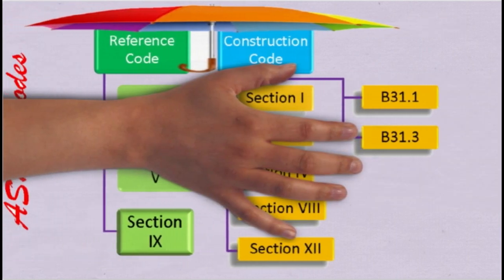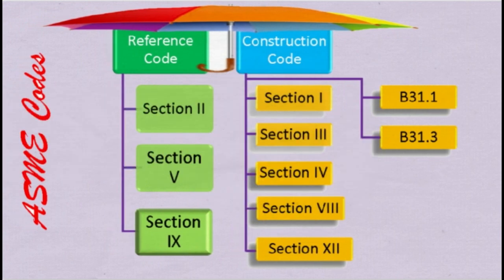As we know, ASME codes are divided into two parts: reference codes and construction codes. Construction codes are Section 1, which covers rules for construction of power boilers; Section 3, which covers rules for construction of nuclear facility components; Section 4, for construction of heating boilers; Section 8, for construction of pressure vessels; and Section 12, for rules for construction and continued service of transport tanks.